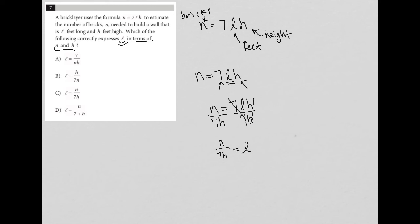Remember, it doesn't matter what side of the equal sign the letter is on. N over 7H equals L is the exact same thing as saying L equals N over 7H. And that being the case, our final answer here, therefore, is choice C.